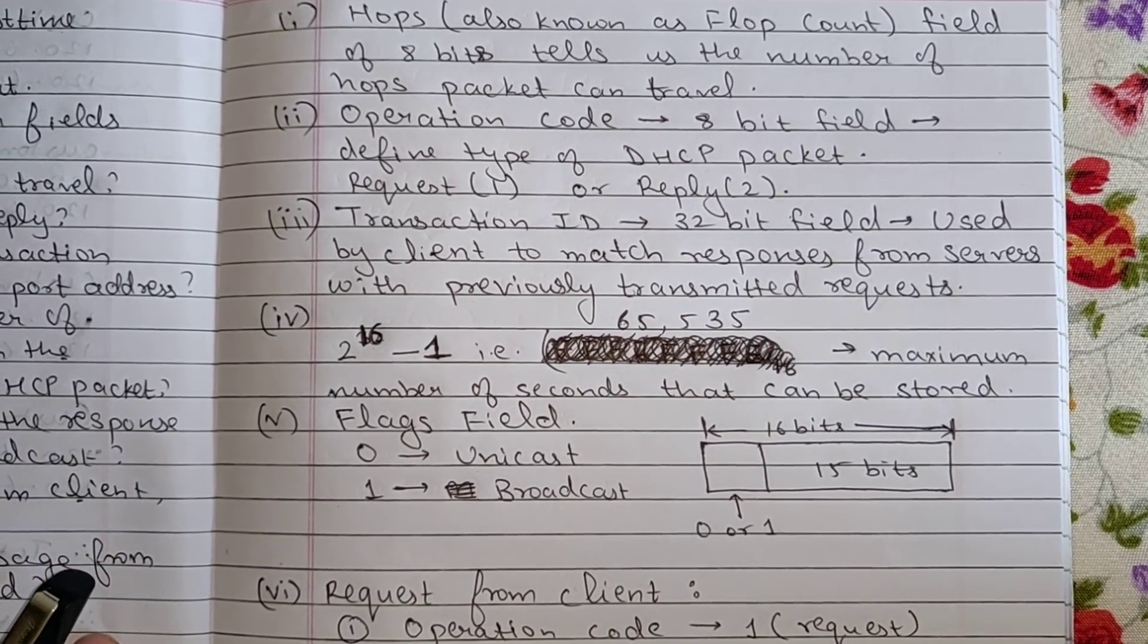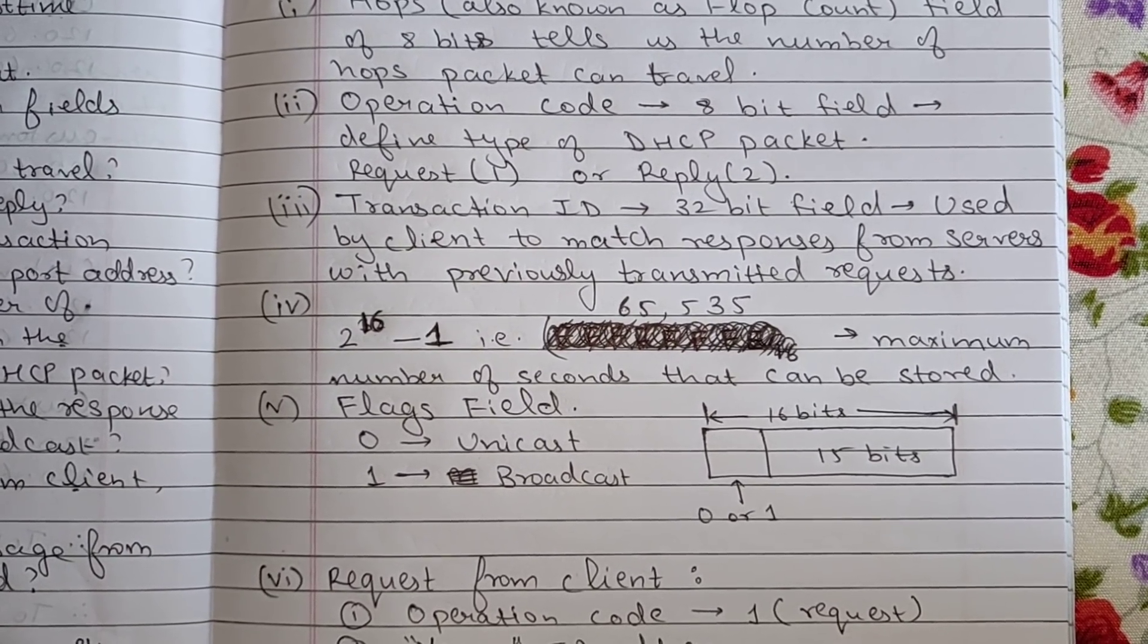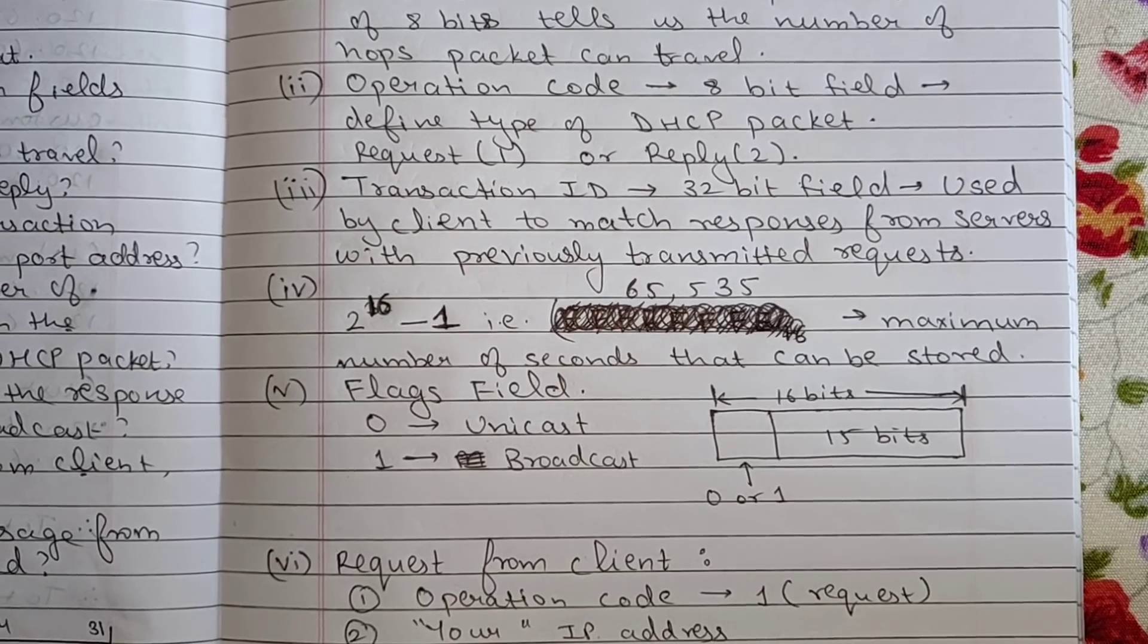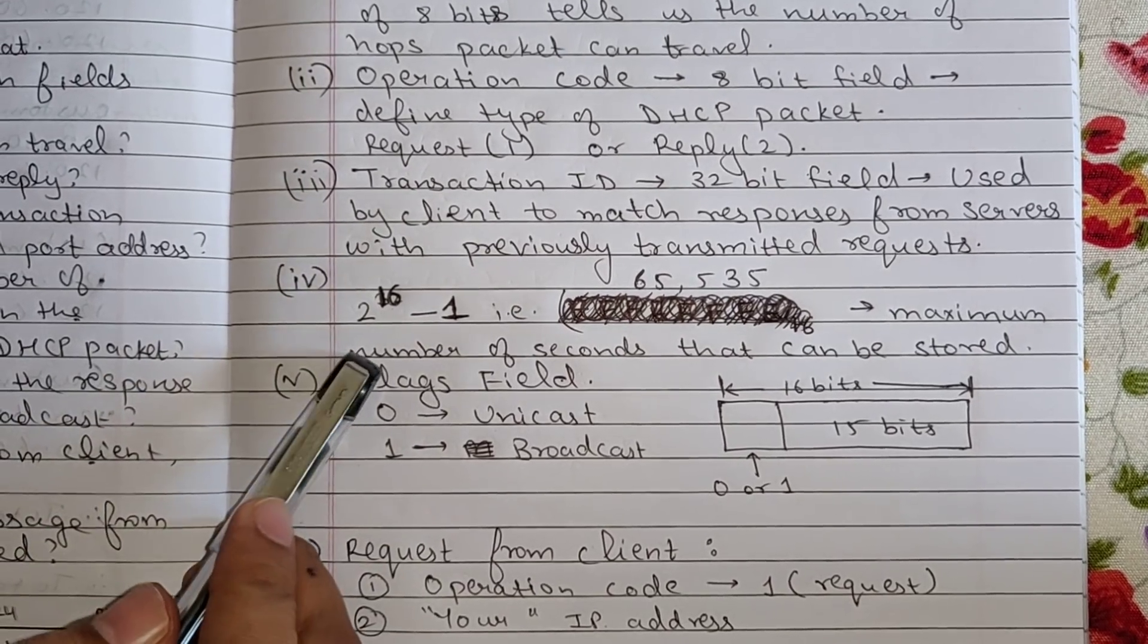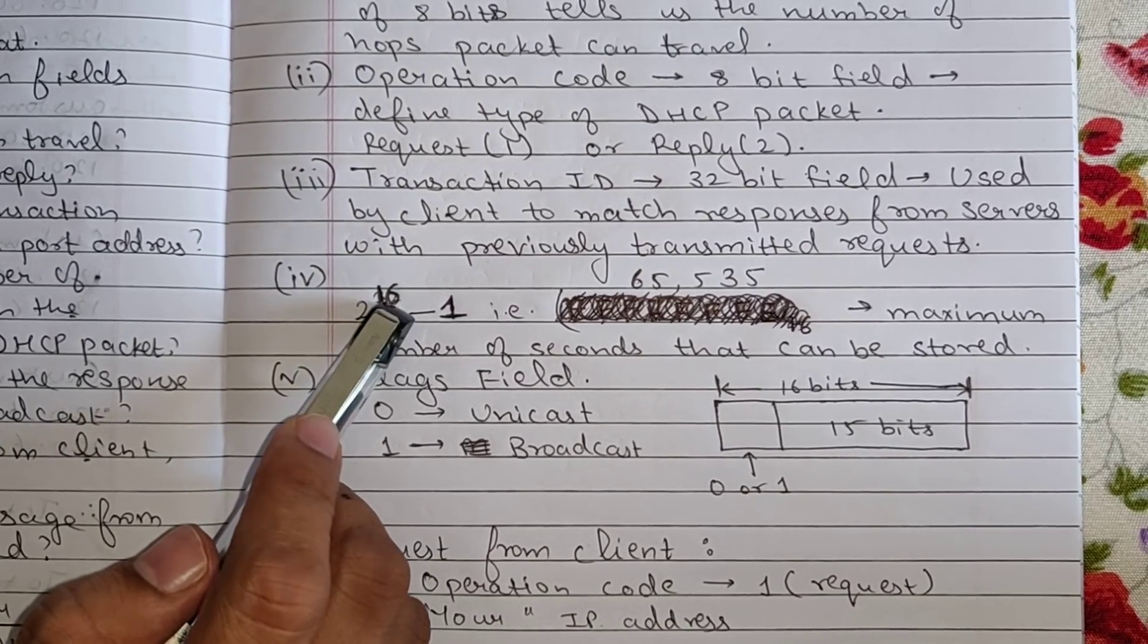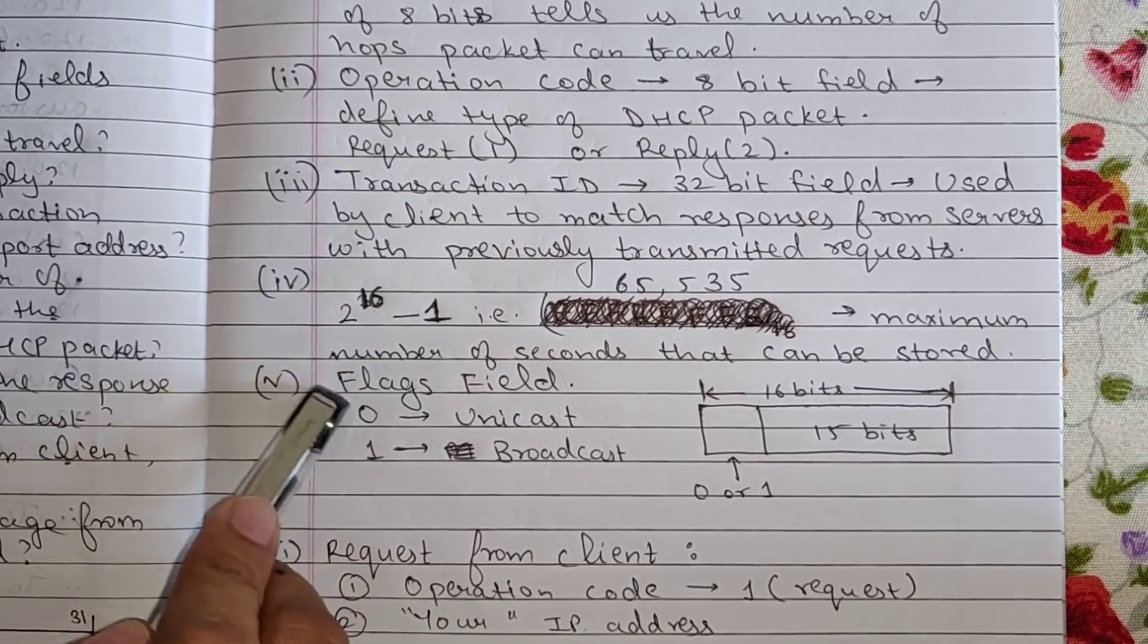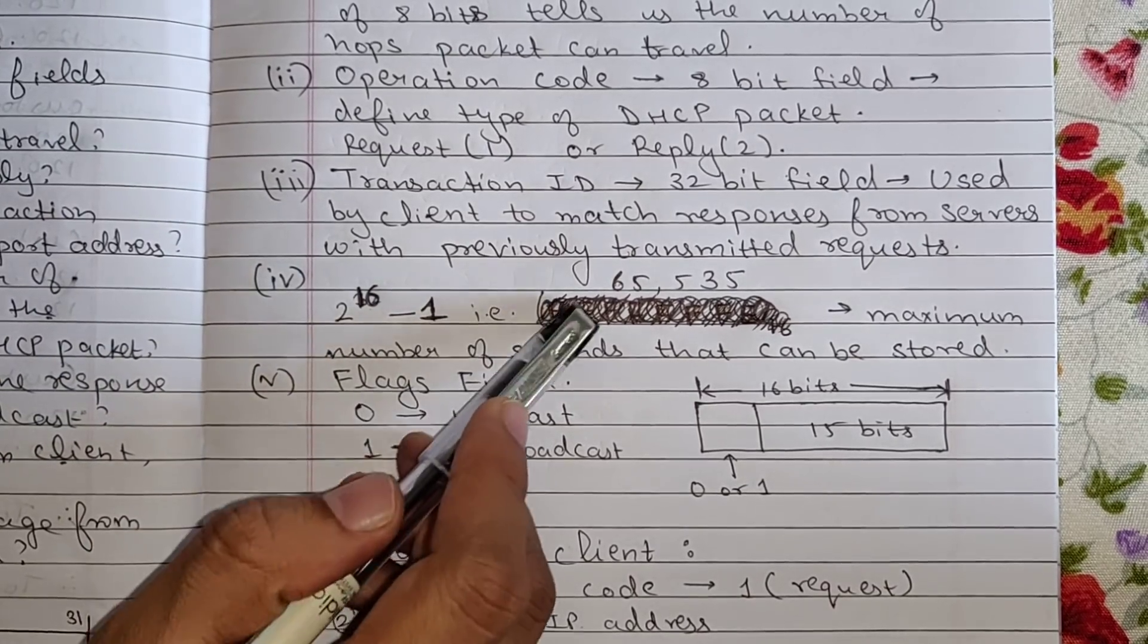So if you remember from the DHCP packet format, the seconds field was of 16 bits. So that means the maximum number of seconds that can be stored will be 2 raise to 16 minus 1. Why minus 1? Because seconds will start from 0.